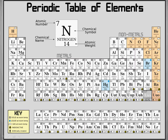Looking at magnesium: it's in the second group, so it has two valence electrons. It is in the third period, meaning it has three energy shells. Notice that the first period has only two elements because the first energy shell can only hold two electrons. The second period has eight elements because the second energy level can hold eight valence electrons, and the third period also holds eight valence electrons, and so on.